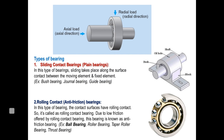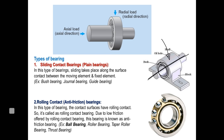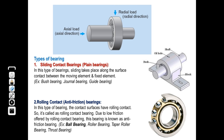In sliding contact bearings, sliding takes place between the moving element and the fixed element. We call these plain bearings. Examples include bush bearings, journal bearings, and guide bearings. As seen in the diagram, this is the bush and this is the shaft — the cylindrical element is fixed as a bearing, and we pour oil through the hole so a liquid film forms which provides bearing action.